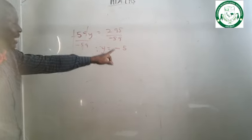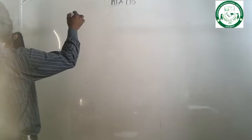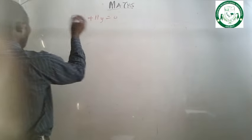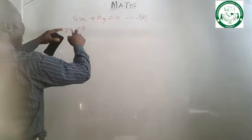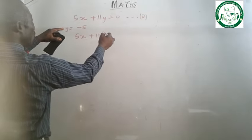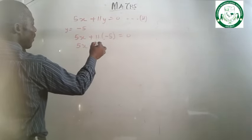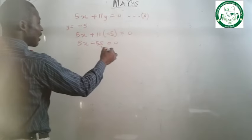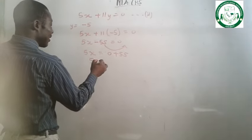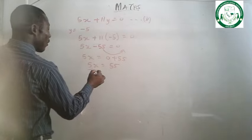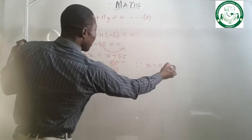Let's substitute the value of y into equation 2. Equation 2 says 5x plus 11y equals to 0. With y equals to minus 5: 5x plus 11 times minus 5 equals to 0, giving 5x minus 55 equals to 0. Collecting like terms: 5x equals to 55. Dividing both sides by 5, therefore x equals to 11.